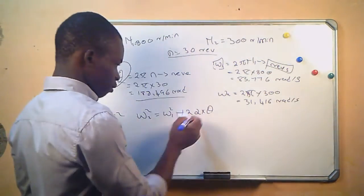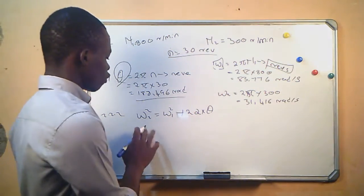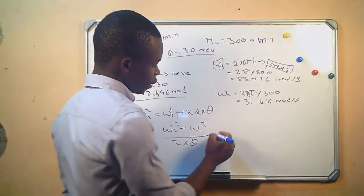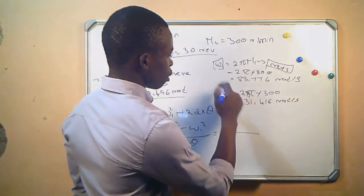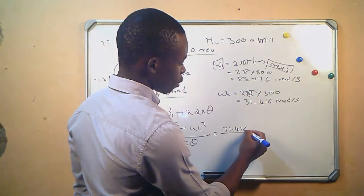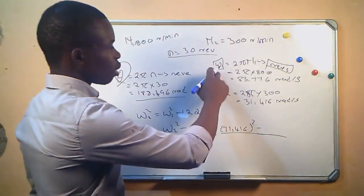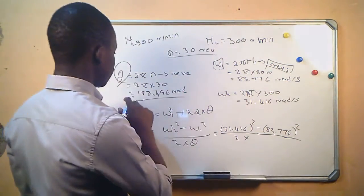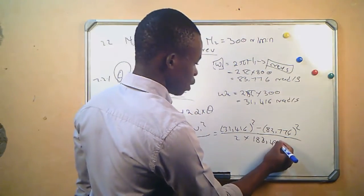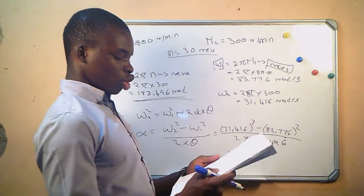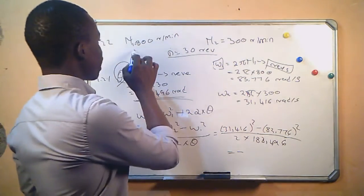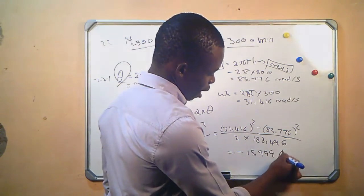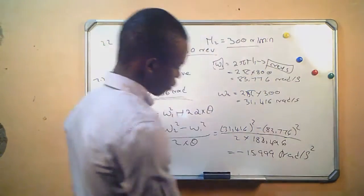Making angular acceleration the subject of the formula gives us α = (ω₂² − ω₁²) / (2θ) = (31.416² − 83.776²) / (2 × 188.496). We get a negative angular acceleration since this is a deceleration: α = −15.999 rad/s².